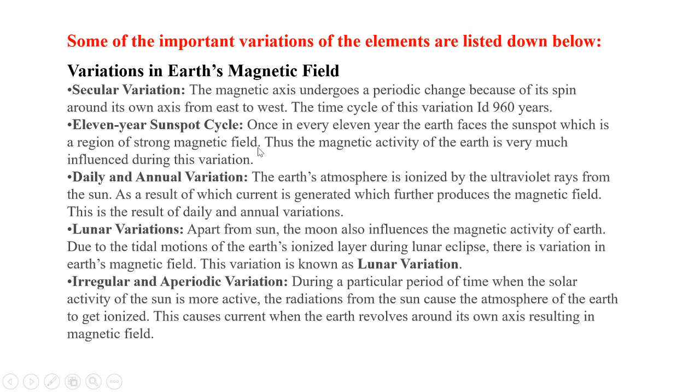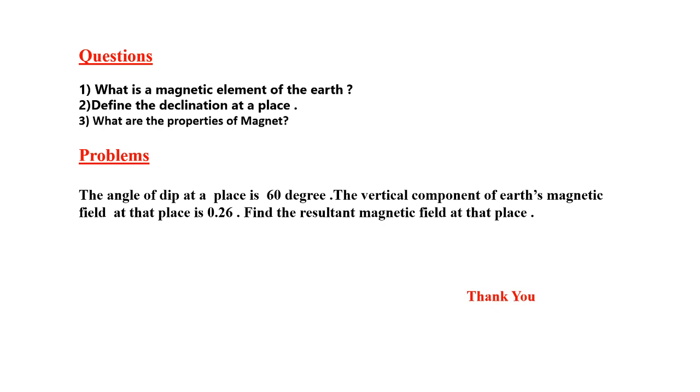In the earth's magnetic field, there are some questions recently asked from these sessions: what is a magnetic element of earth, define the declination at a place, what are the properties of magnets. Also, I am discussing a numerical problem. The angle of dip at a place is 60 degrees, the vertical component of earth's magnetic field at that place is 0.26, find the resultant magnetic field at that place. This is the session about introduction of earth's magnetic field or magnetism, also the elements of earth, magnetic elements. Thank you.